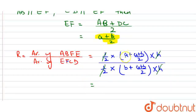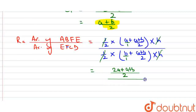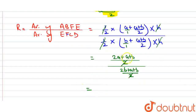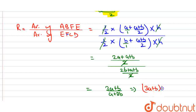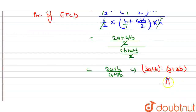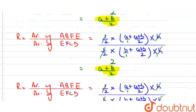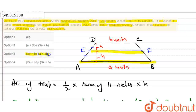Now we simplify the bracket. Cancelling H with H and half with half, we take LCM of 2 and 1 which is 2. In the numerator we get 2A plus A plus B, which gives 3A plus B. In the denominator we get 2B plus A plus B, which gives A plus 3B. After cancelling the 2s, the ratio becomes 3A plus B divided by A plus 3B. So the ratio of area ABFE to area EFCD is 3A plus B : A plus 3B.